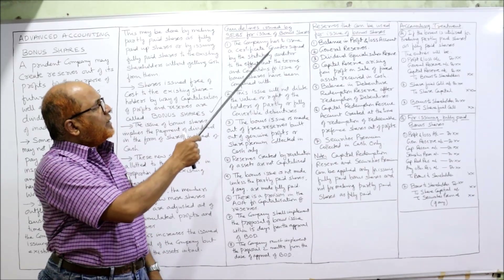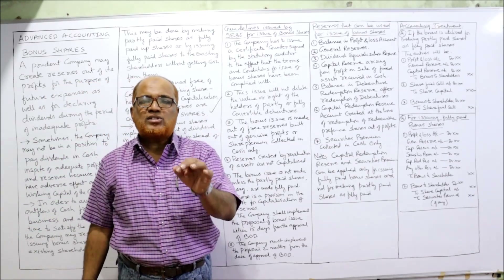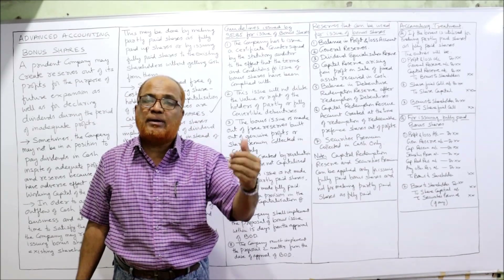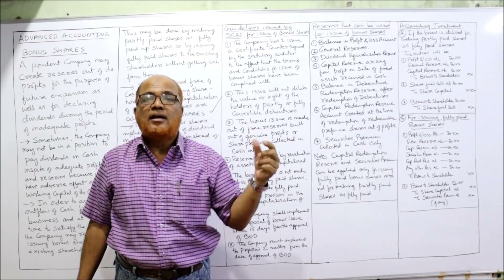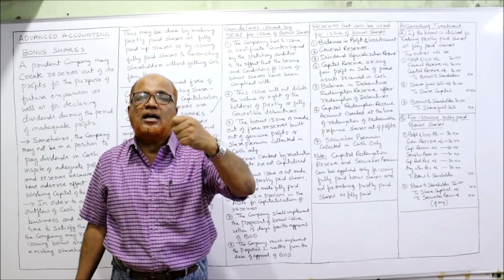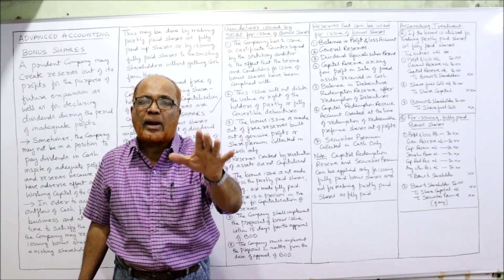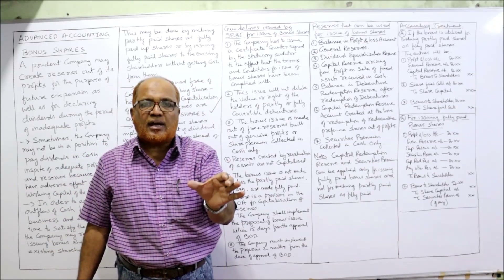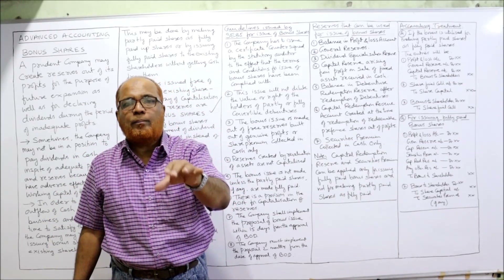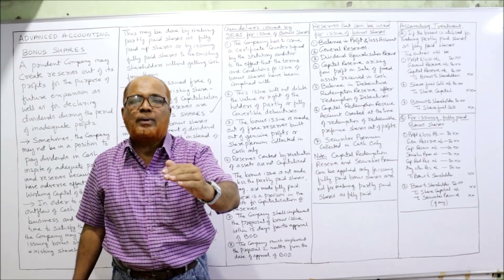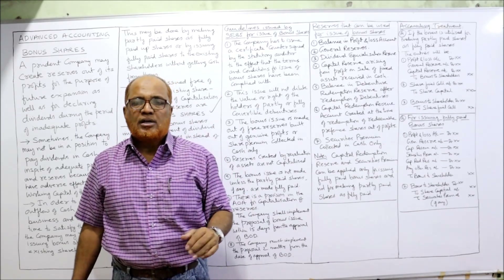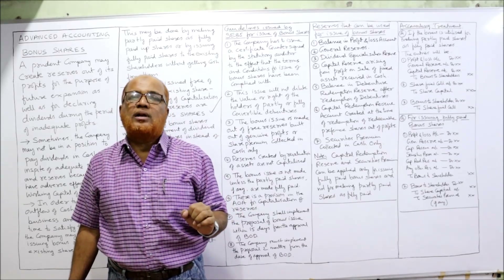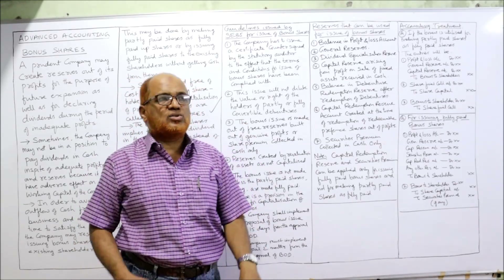The first guideline says the company has to issue a certificate. First of all, the company has to obtain a certificate countersigned by the statutory auditor that all the terms and conditions regarding the issue of bonus shares are complied with, as per the provisions of the Companies Act. The company has to satisfy, countersigned by the statutory auditor, that all terms and conditions are satisfied.